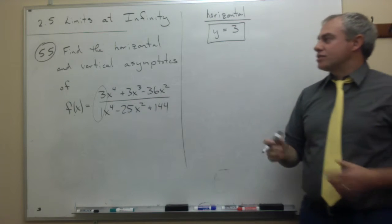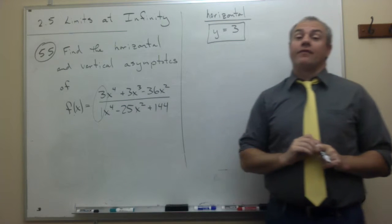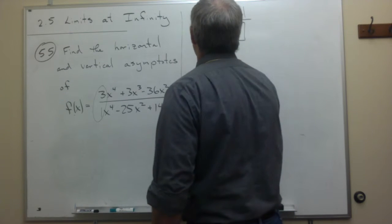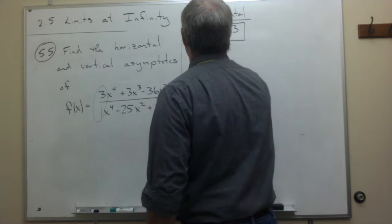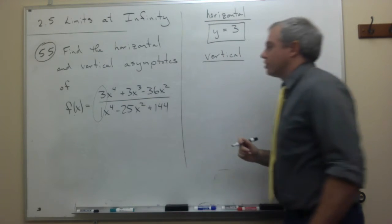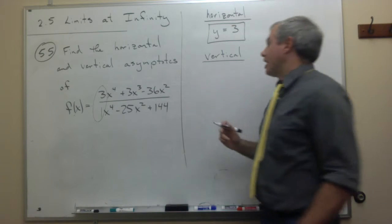We can practically just read the horizontal asymptote right off of the function. What if we want to find the vertical asymptote or asymptotes?